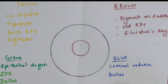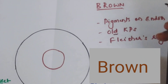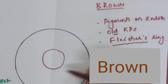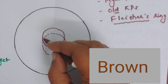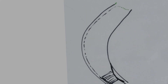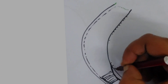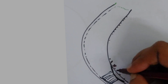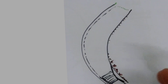Brown color is used to show pigments, the endothelium, and old keratic precipitates (KPs). Fleischer's ring, seen in keratoconus — the iron deposition at the base of the cone — can be shown in brown. Pigment dispersion over the endothelium and pigment tree changes over the endothelium are shown in brown. Old KPs can also be shown in brown on the endothelium in the cut section or oblique view of the corneal diagram.